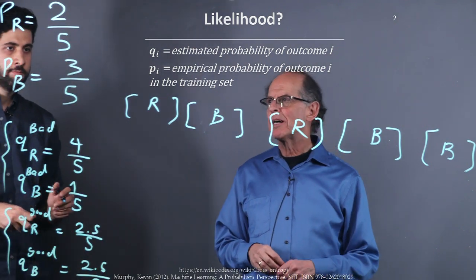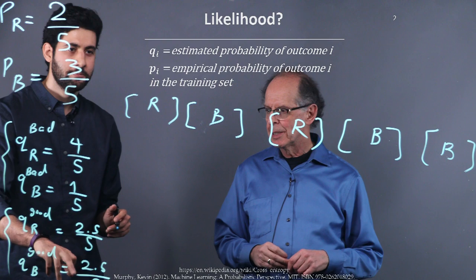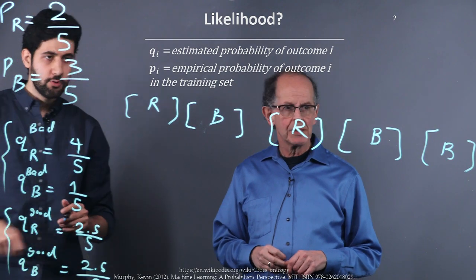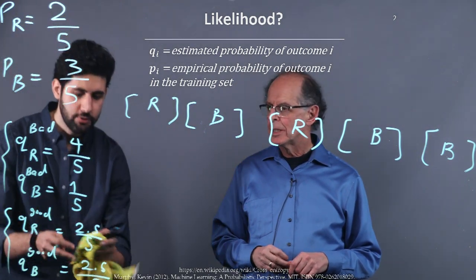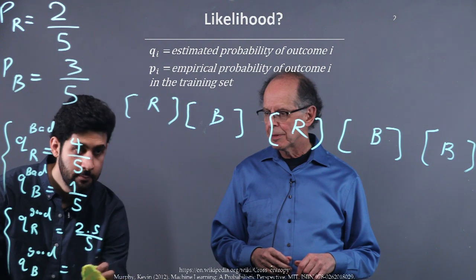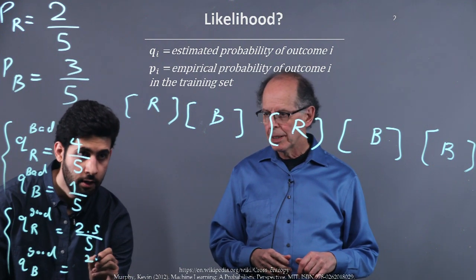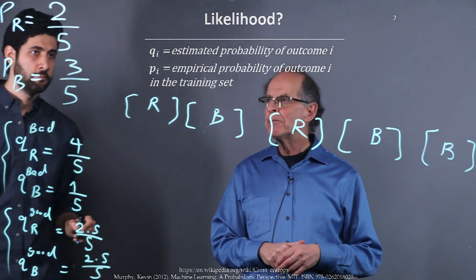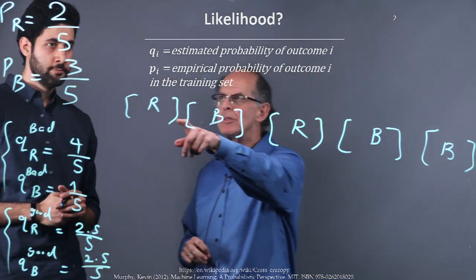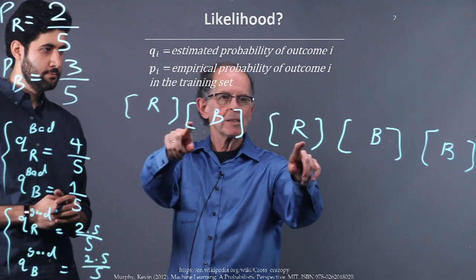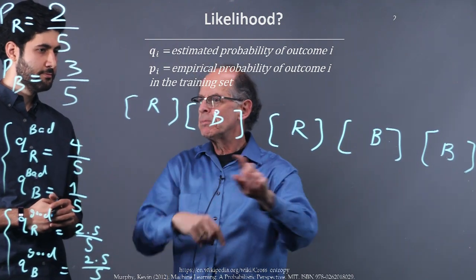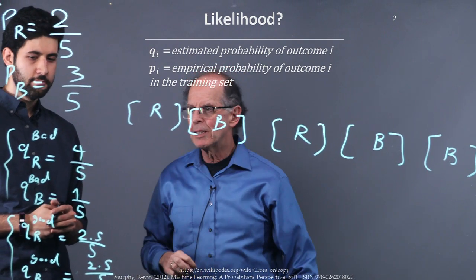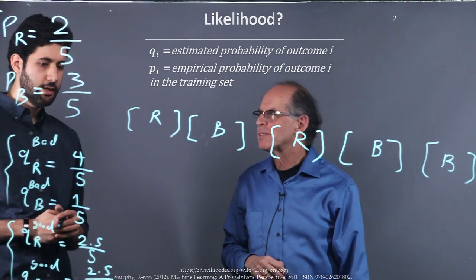A good guess could be something like this, more similar to the training set. Something like Q of red is two and a half over five, and Q of blue is two and a half over five. Now, how do the numbers work for likelihoods? Are we going to multiply two-fifths squared times three-fifths cubed and do the same for the others and see where those numbers come out?